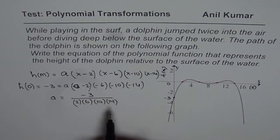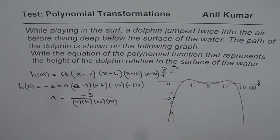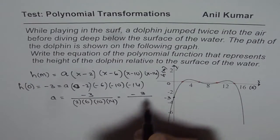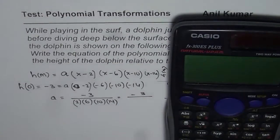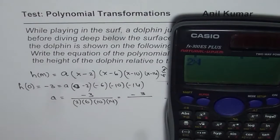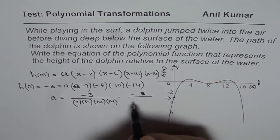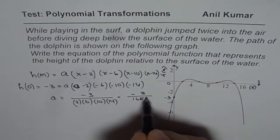So you can use your calculator to find this value. Approximately, let me write it down as, we'll write in fractions itself, 3 over, let's calculate the denominator. It is 2 times 6 times 10 times 14, 1680. So it is minus 3 over 1680.